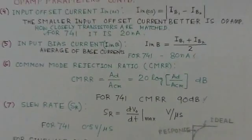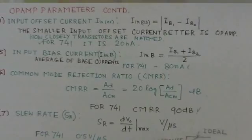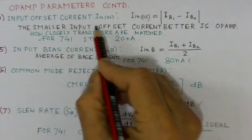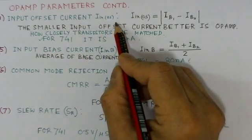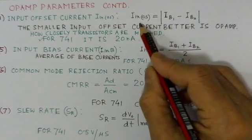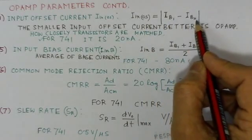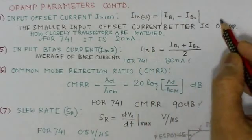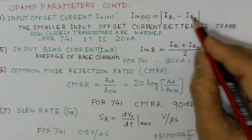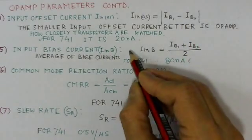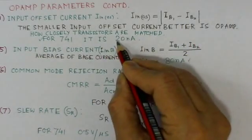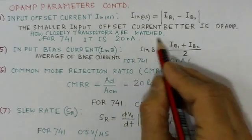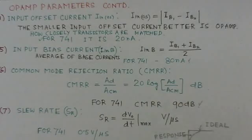Another important parameter is input offset current, I_in_os. This is the difference of the base currents: I_B1 minus I_B2. The smaller the input offset current, the better the operational amplifier, as it indicates how closely the transistors are matched. For the 741, this value is about 20 nanoamperes.